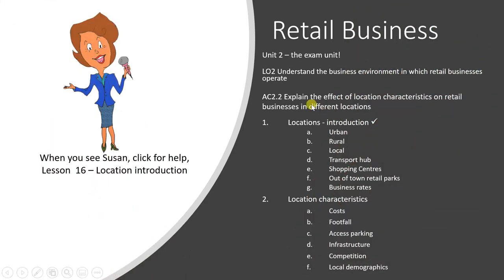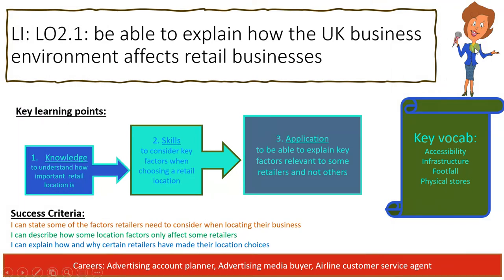Topic 2.2: explain the effect of location characteristics on retail businesses in different locations. Today's lesson is an introduction — this is lesson 16. Welcome to the learning steps. First, we're looking at knowledge about understanding how important retail location is, then we'll build up to consider key factors when choosing a retail location, and finally we'll look at the application of this knowledge — being able to explain key factors relevant to some retailers and not others.